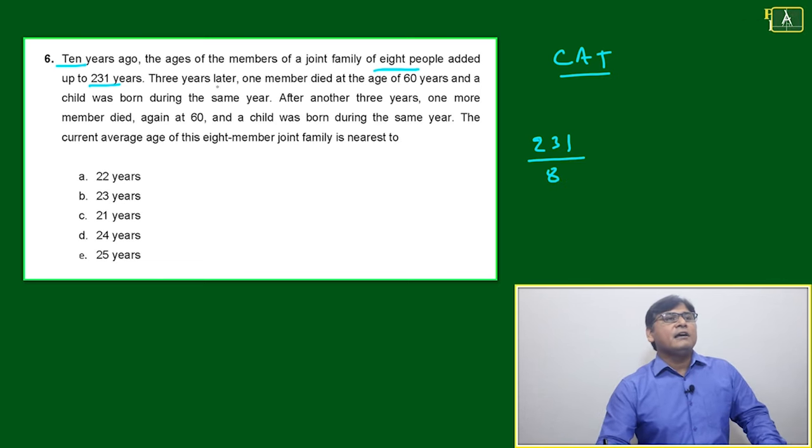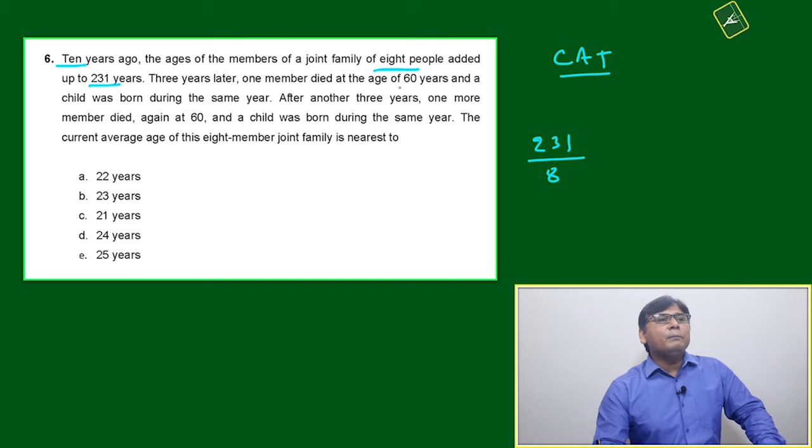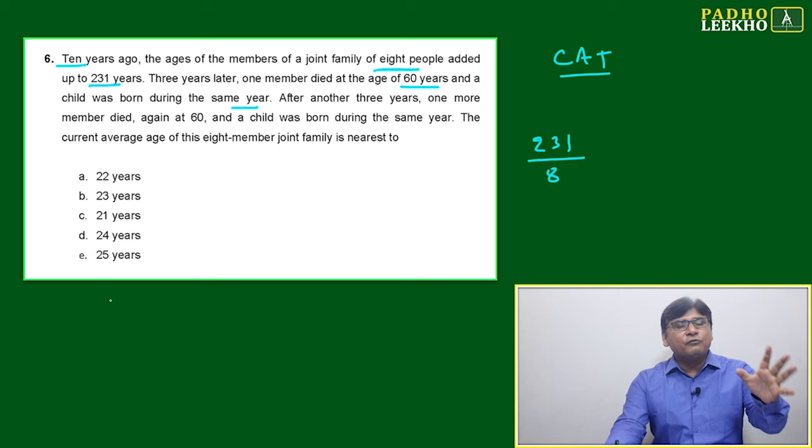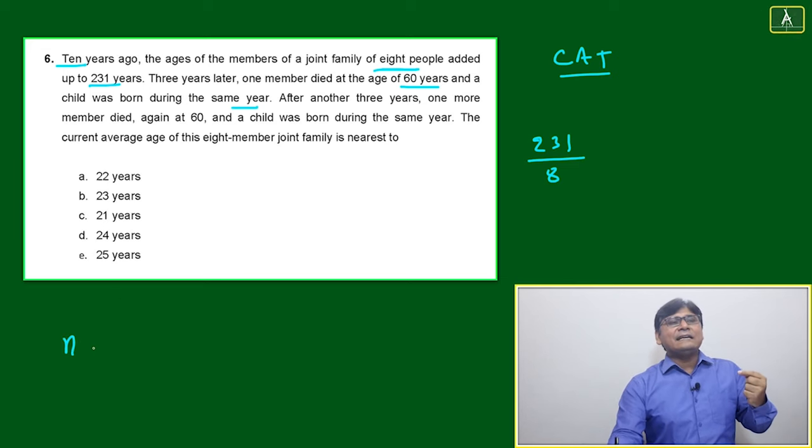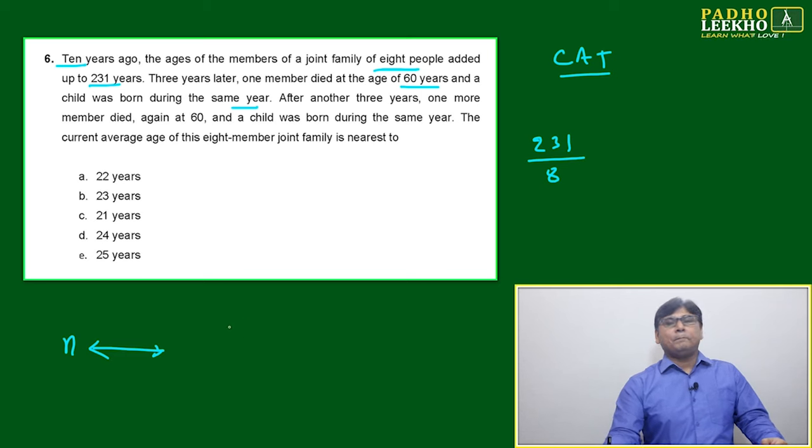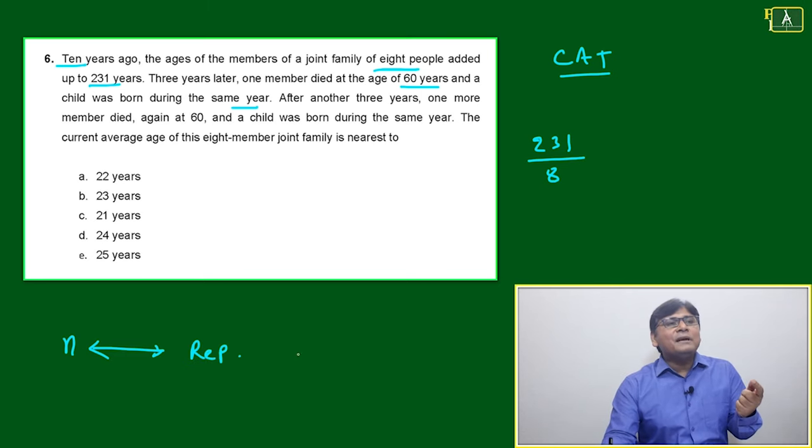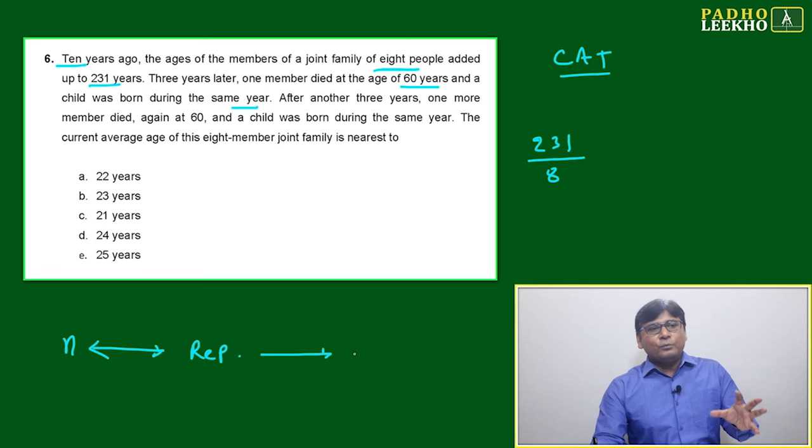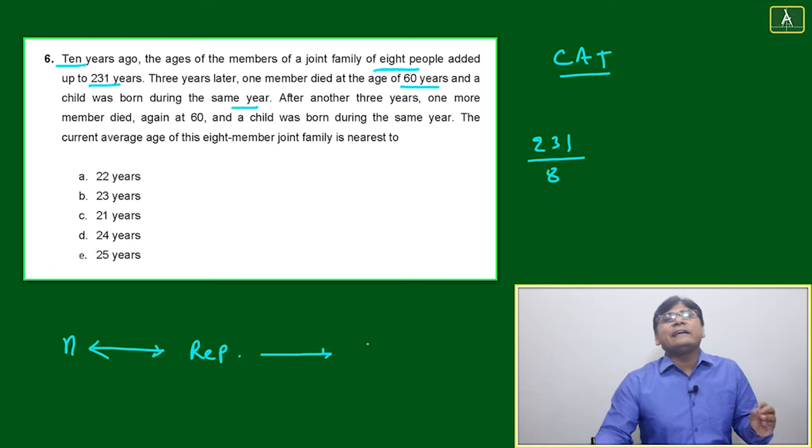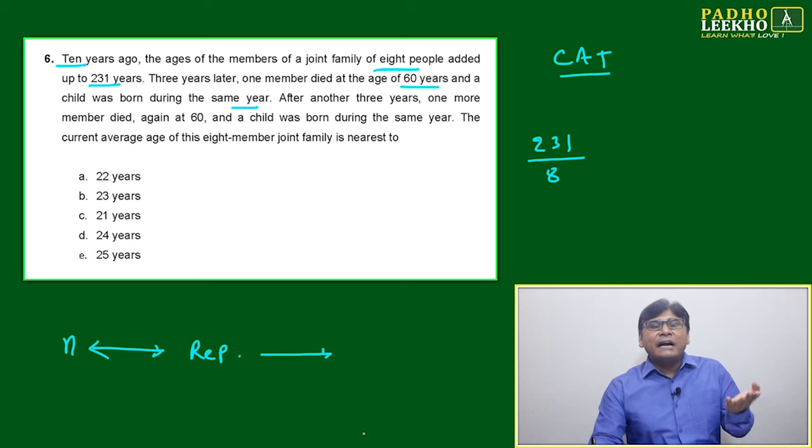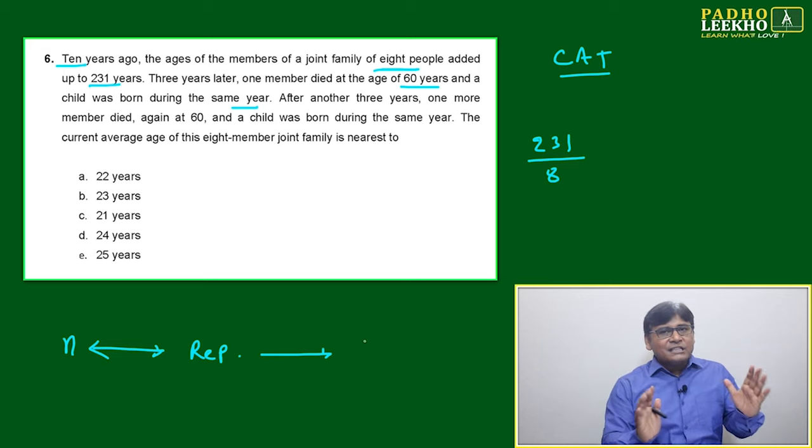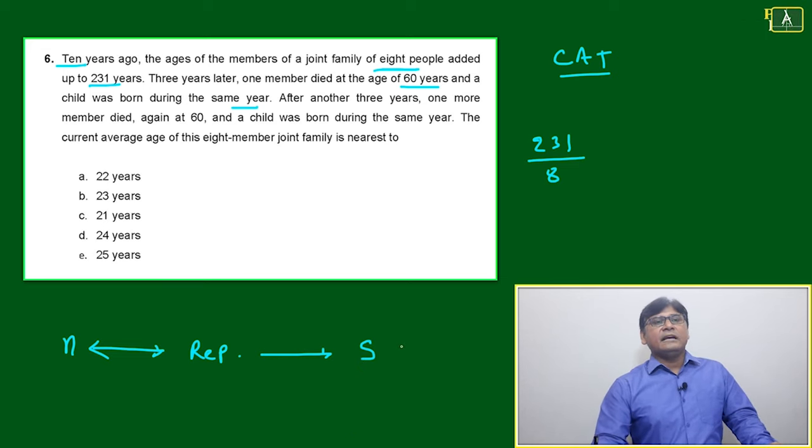Three years later, one member died at the age of 60 years and a child was born during the same year. This is the third case - when n is same, replacement is happening. Old people dying, new people taking birth. Old people die at higher age, new child takes birth at zero age. Means n is not changing but S is changing.